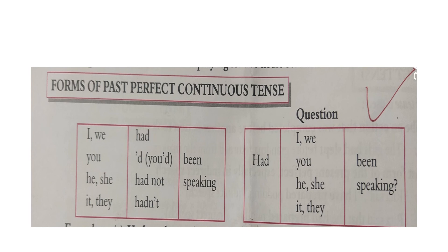Past perfect continuous tense is used to show an action that has been going on before another past action. The given table can guide us to make affirmative, negative, and interrogative sentences. For example: 'I had been speaking to all the people before the election' — affirmative. 'He had not been speaking well to his friends since a year' — negative in past perfect continuous tense. 'Had he been speaking about the trip before the storm?' — interrogative.